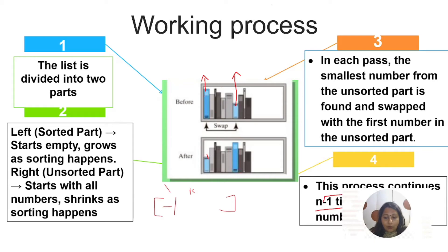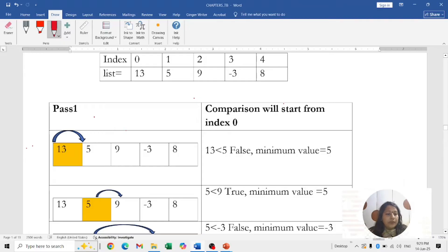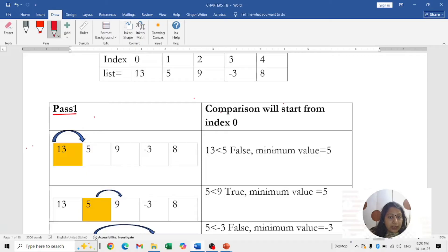This process continues n minus 1 times until all numbers are in order. Next we are going to see the tracing technique of selection sort. We have a list: 13, 5, 9, -3, and 8. We are going to use this list to trace the sorting technique.